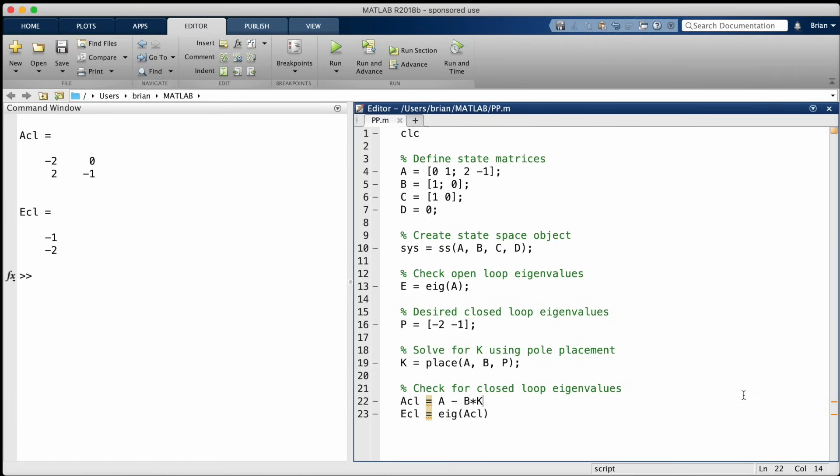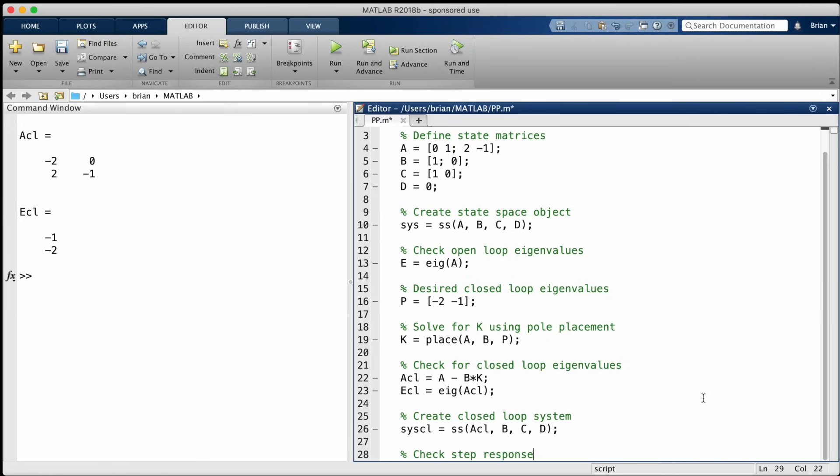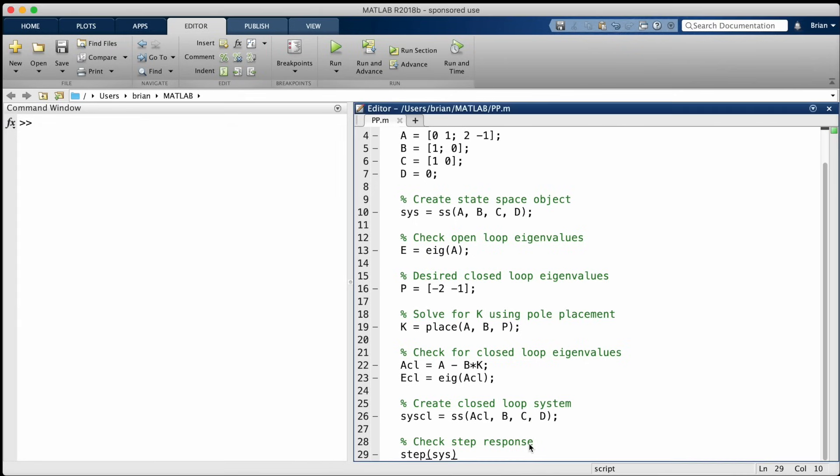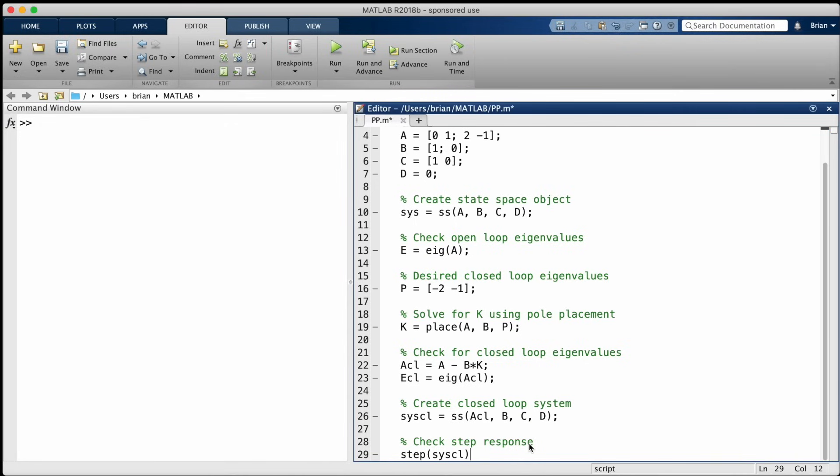Now the new closed loop A matrix is A minus BK. And just to double check, this is what ACL looks like, and it does have eigenvalues at minus 1 and minus 2. Ok, I'll create the closed loop system object, and now we can compare the step responses for both. The step response of the open loop system is predictably unstable, and the step response of the closed loop system looks much better.